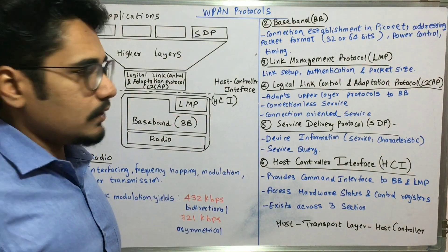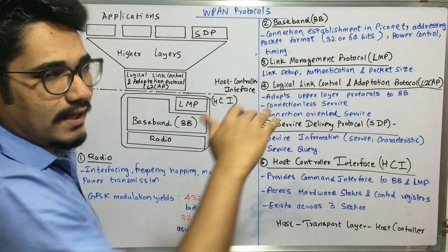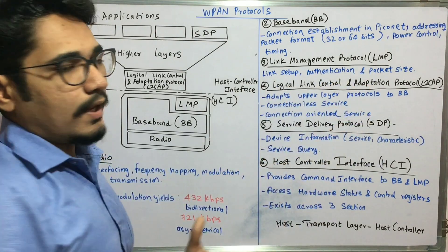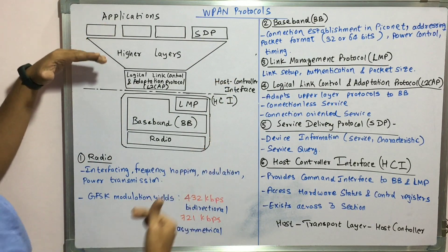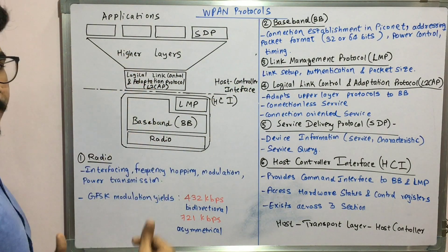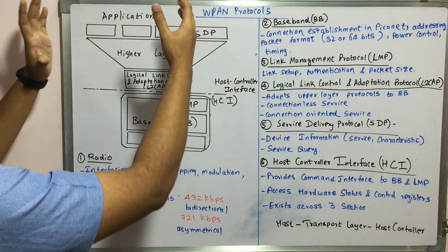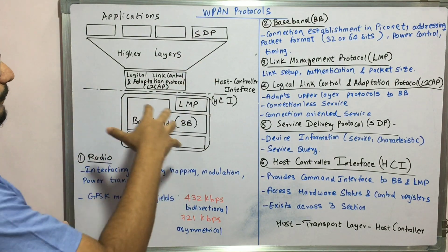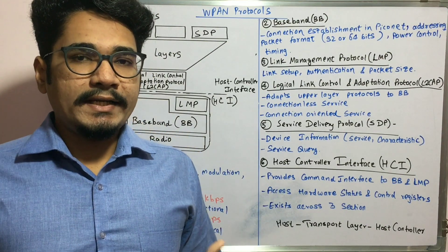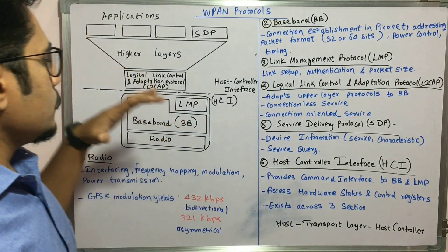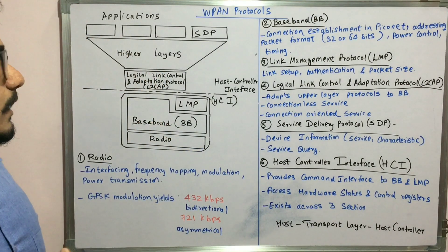Next we move to the Logical Link Control and Adaptation Protocol, known as L2CAP. There is a host controller interface which splits the lower layer protocols from the higher layer protocols. L2CAP sits just above the host controller interface and adapts all upper layer protocols to the baseband — meaning all higher layer protocols above L2CAP are managed with the help of the baseband. It makes these protocols compatible to the baseband, since the baseband forms the basis of any technology or standard made from IEEE 802.15.